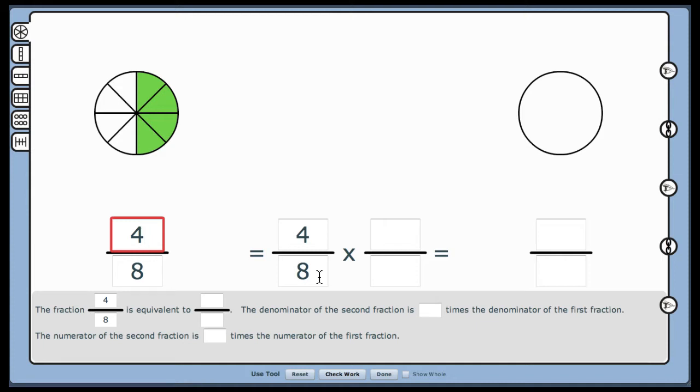Explain to students that although we can work with the model on the right to create a common denominator, there is a procedure that we can use to find a common denominator without relying on those models. We simply multiply the first fraction by a multiple of 1.